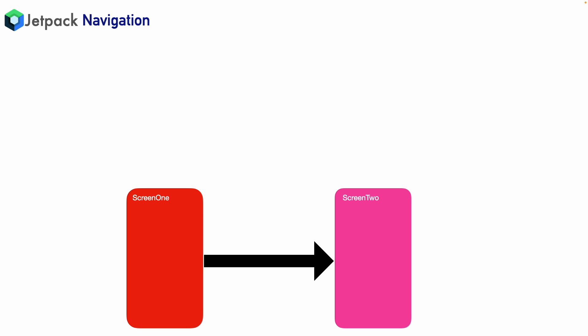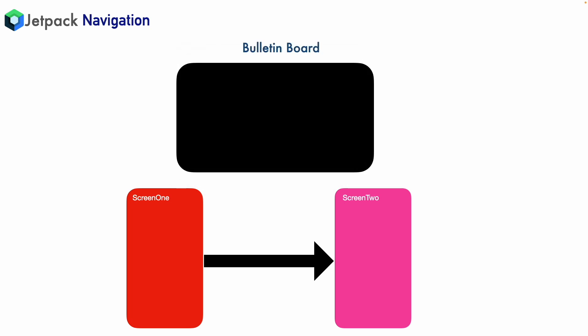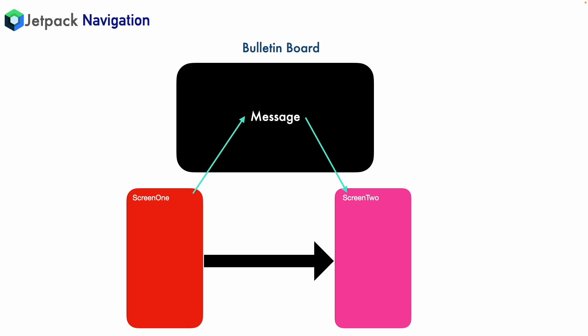The concept behind this is a pretty old one — you might have already seen it. You typically have this bulletin board. Management usually writes messages that it wants to communicate to the whole university or the student community. It puts the message on the bulletin board and whoever is passing by can read it and get the message. This is the whole idea behind this. In our case, it is not management and the student — it is Screen 1 and Screen 2 who will be writing to this bulletin board.